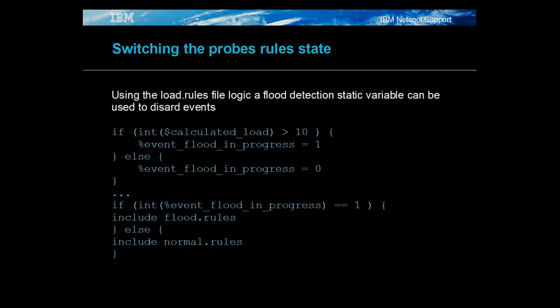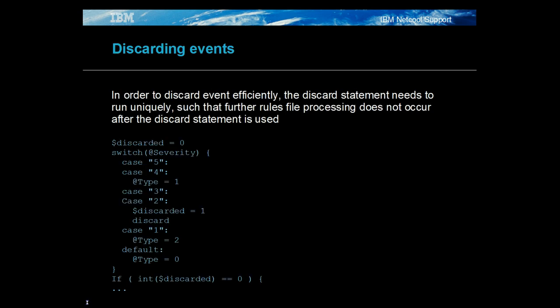Static variables can be used to set the rules file state. In this example, the value of the calculated load is used to switch between different types of probe rules file logic, depending upon the amount of events being processed.